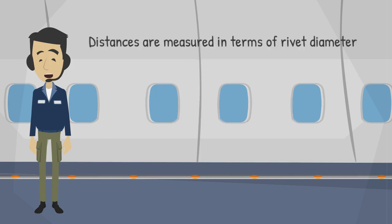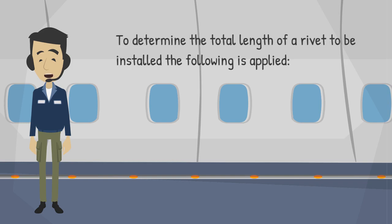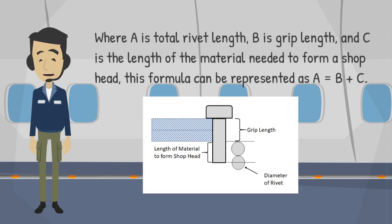Distances are measured in terms of rivet diameter. To determine the total length of a rivet to be installed, the following is applied: where A is total rivet length, B is grip length, and C is the length of the material needed to form a shop head. This formula can be represented as A equals B plus C.